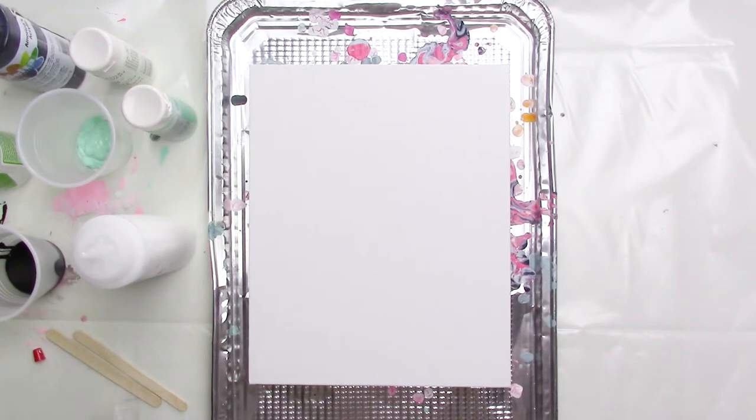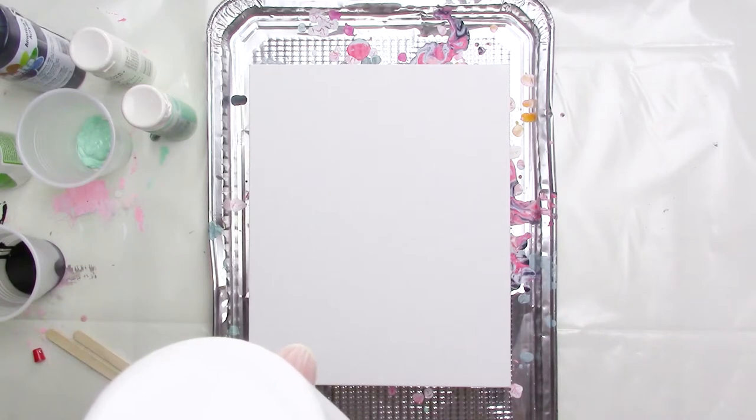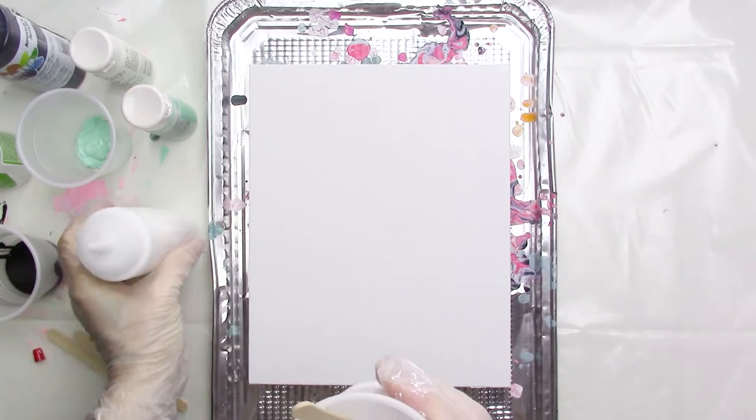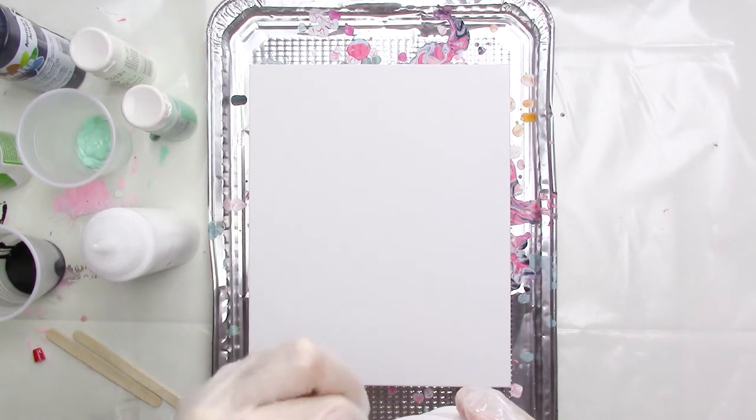Up until this point, I haven't used any silicone based or other additives in my acrylic pour paintings, so they have a more marbled look as opposed to lots of cells, which have become one of the trademarks of acrylic pour painting.